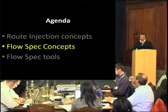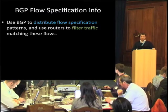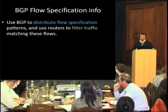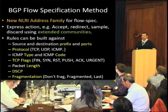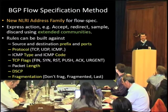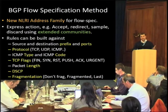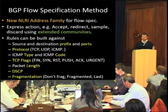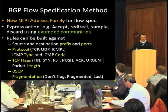So what is FlowSpec? Essentially, it allows you to use BGP to distribute patterns that describe traffic, prefixes, or anything you might want to use to base filters upon. It introduces a new NLRI address family to the BGP protocol, and you express an action against a prefix. Those rules can be built against prefixes and ports, individual protocols, ICMP types and codes, particular TCP flags, packet length, DSCP, and whether the packet is fragmented or not. So pretty much anything you might want to build rules against is possible to express with FlowSpec.